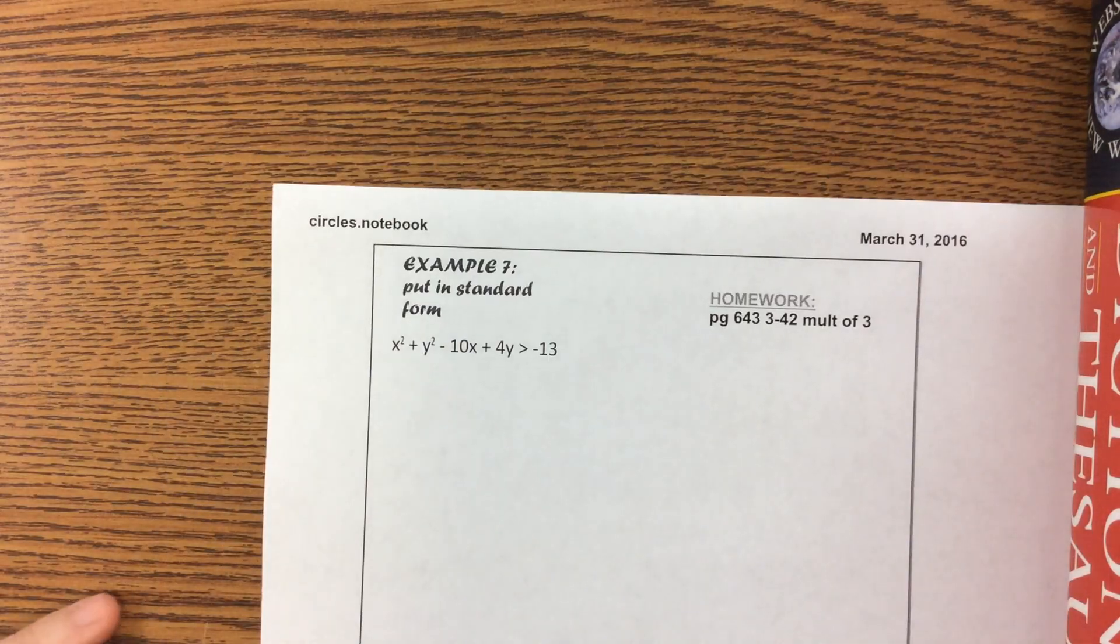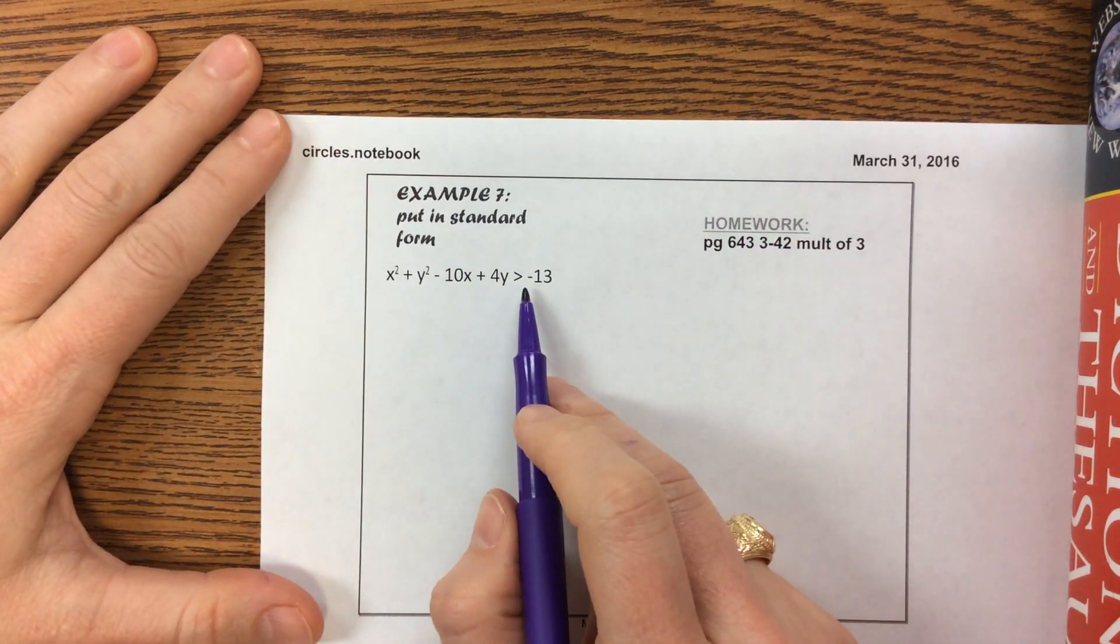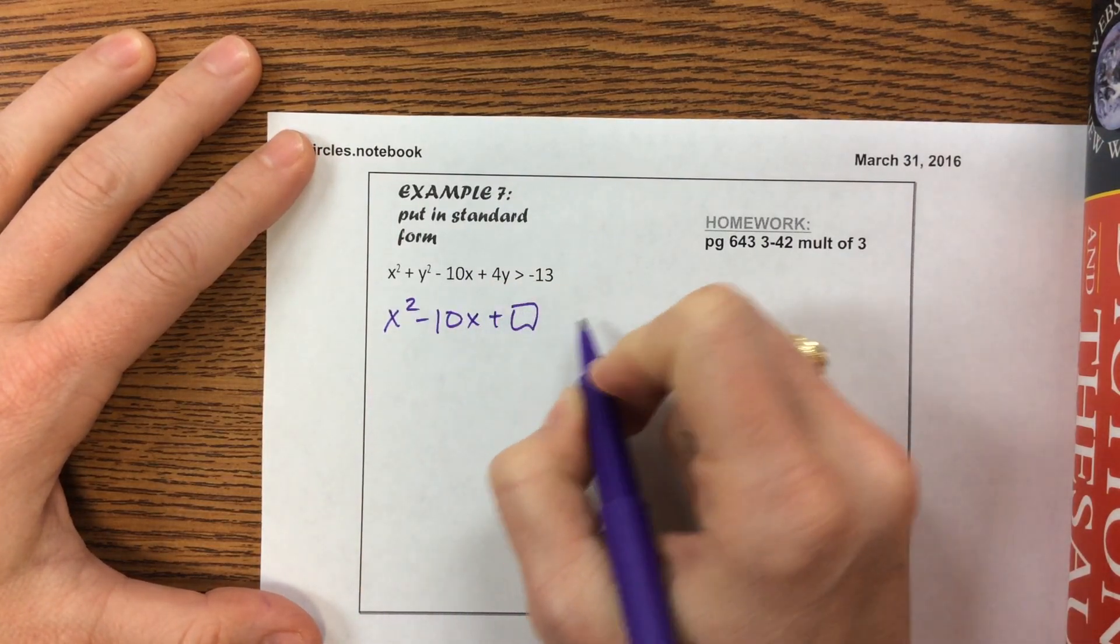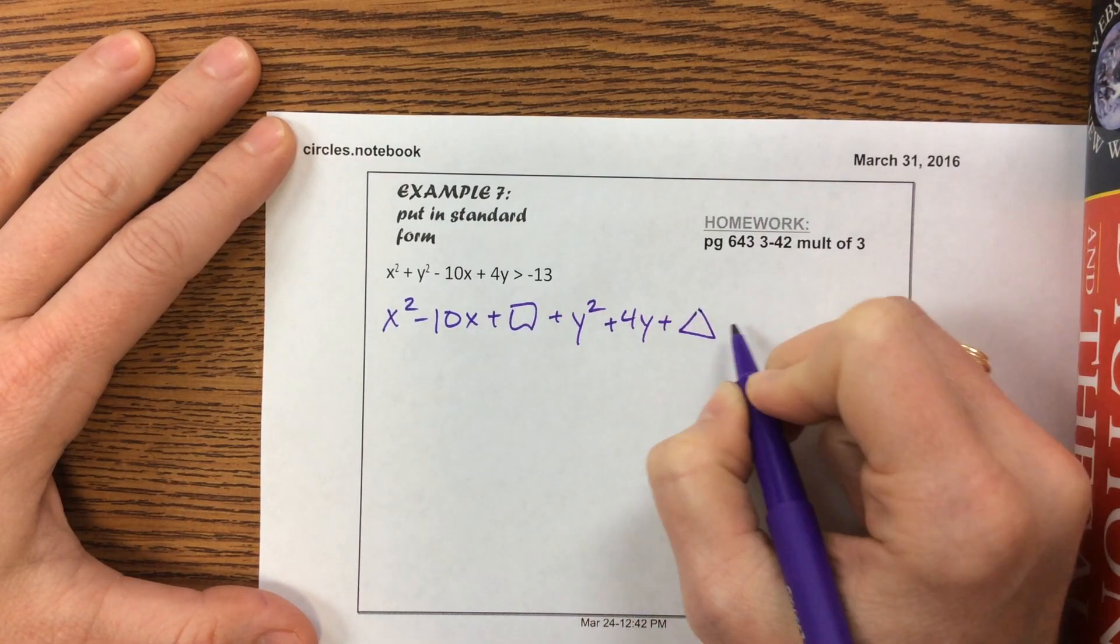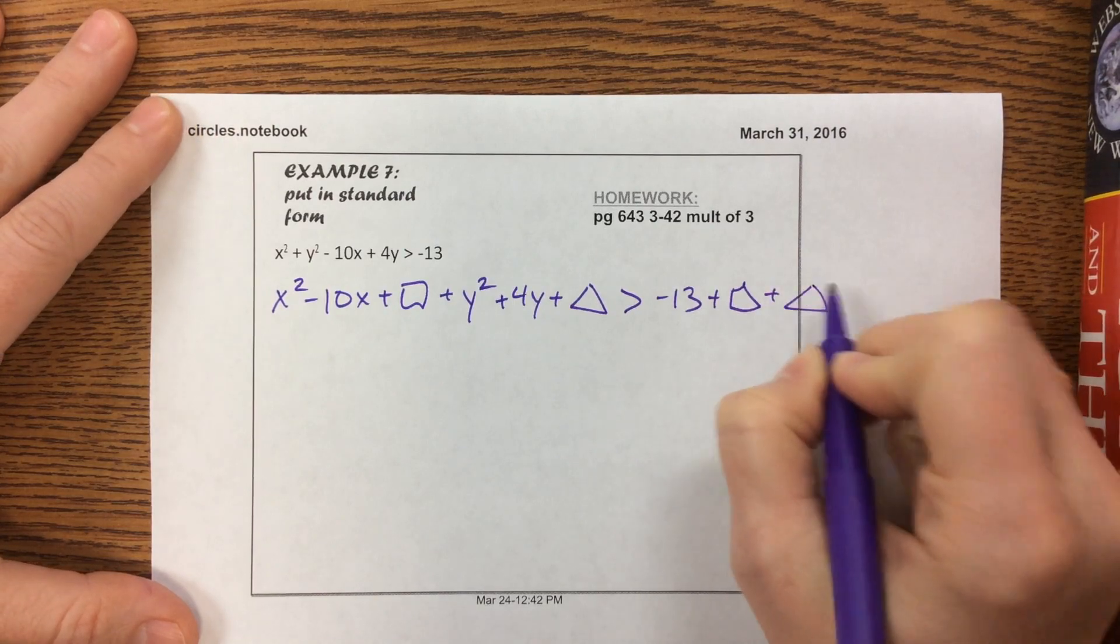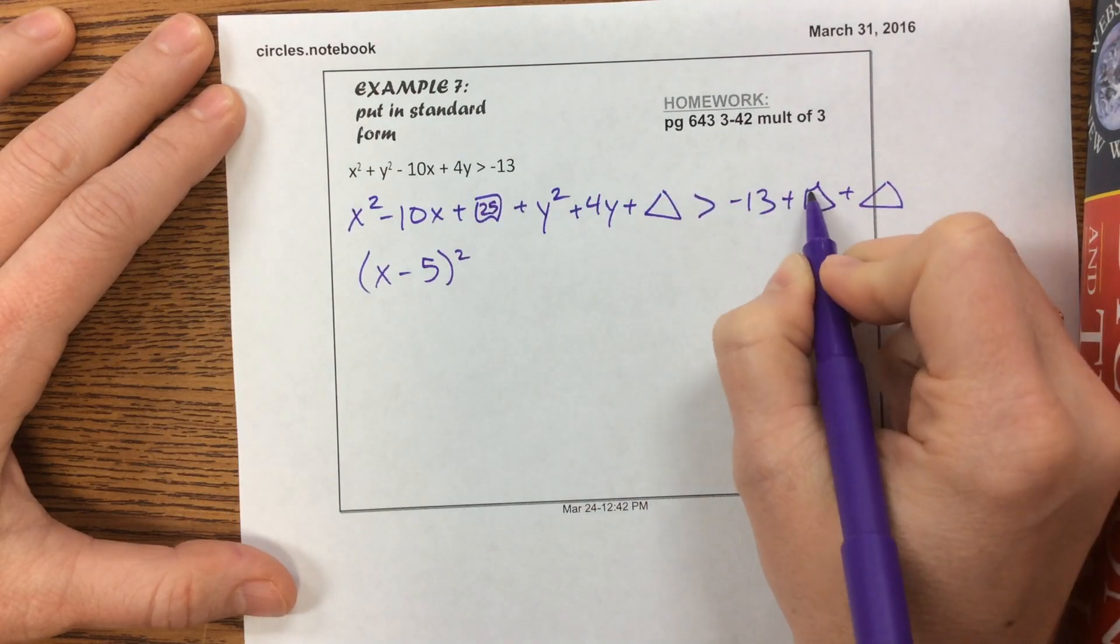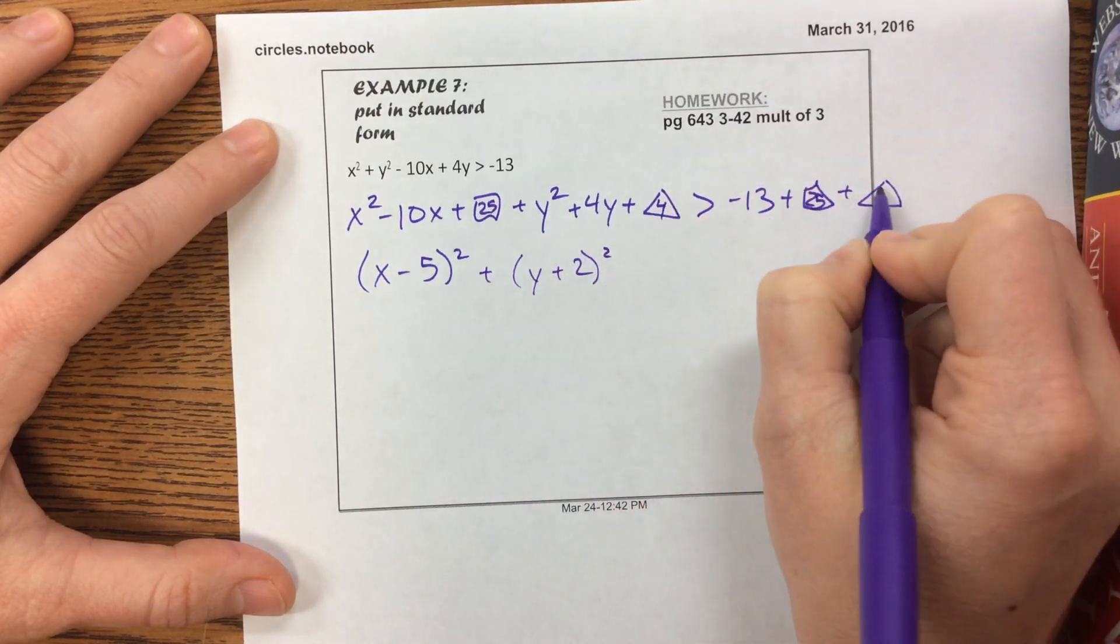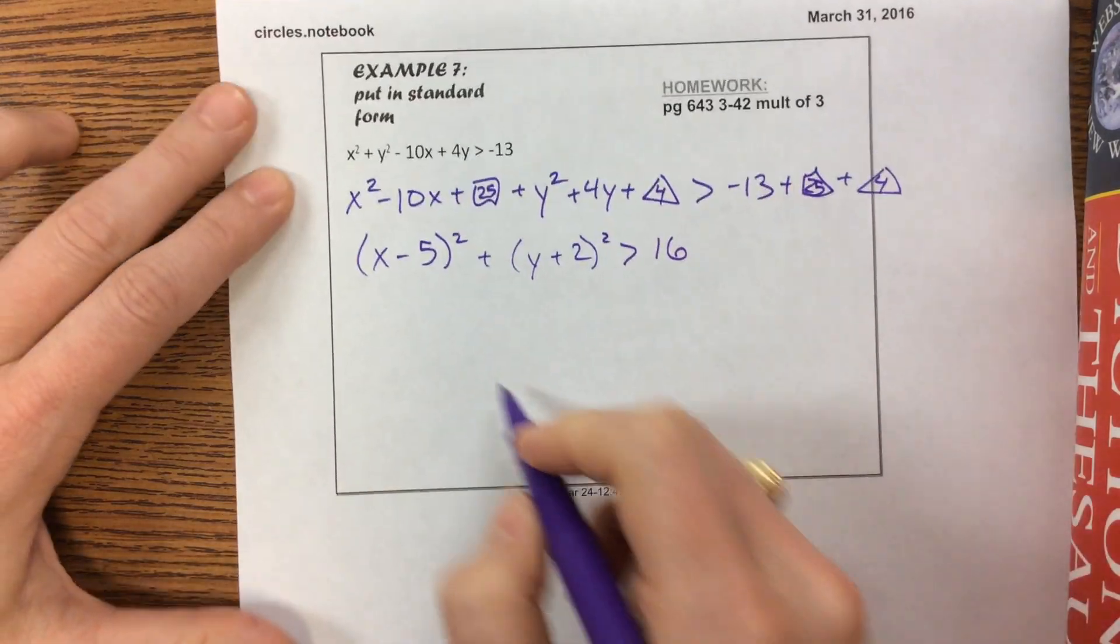One more example, then homework. Same idea, we're putting this in standard form. This one has an inequality, so we'll have shading. X squared minus 10x plus a box, plus y squared plus 4y plus a triangle, is greater than negative 13 plus box plus triangle. X minus 5 squared, box is 25. Y plus 2 squared, triangle is 4. That's 29 minus 13 is 16, so this is greater than 16.